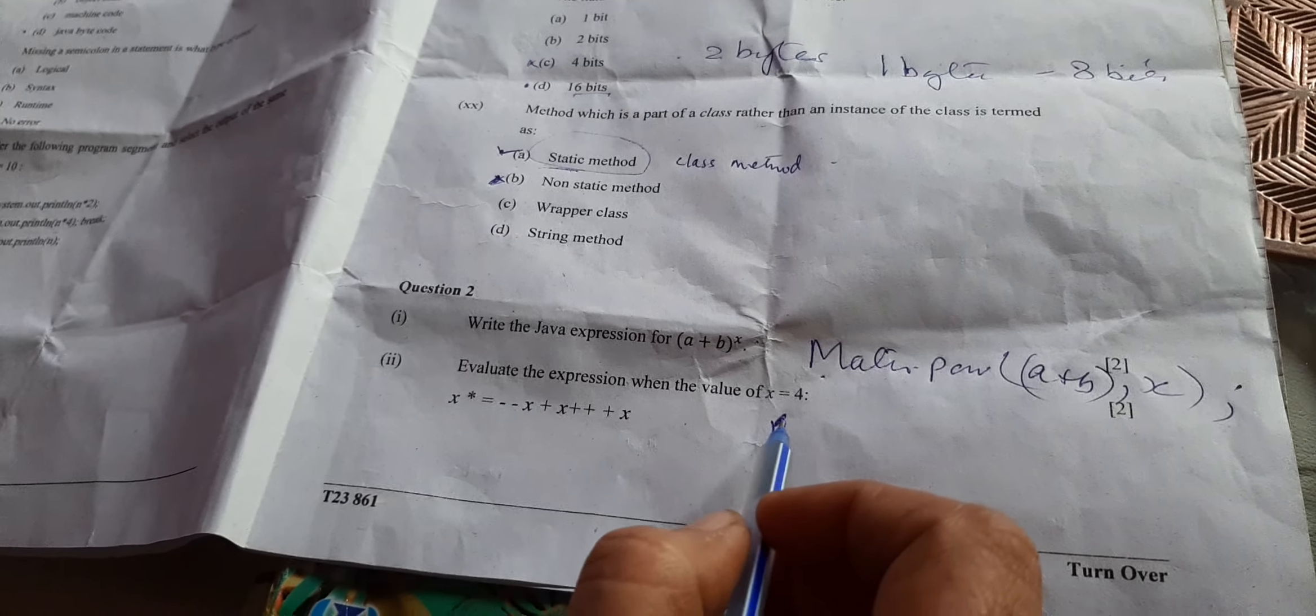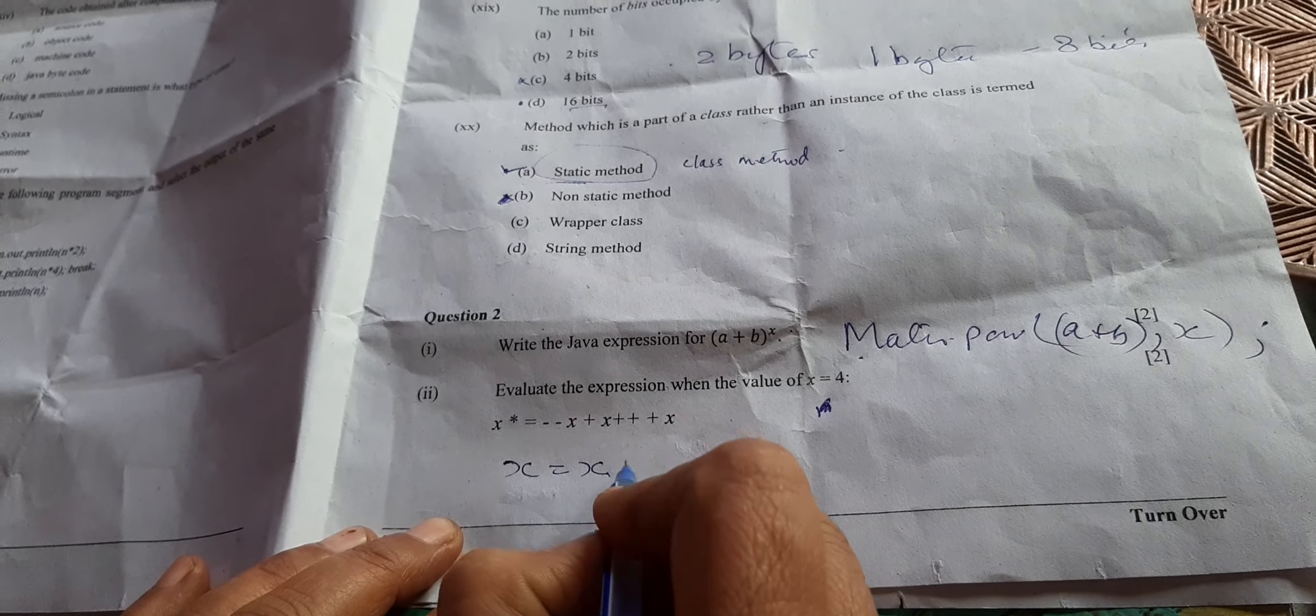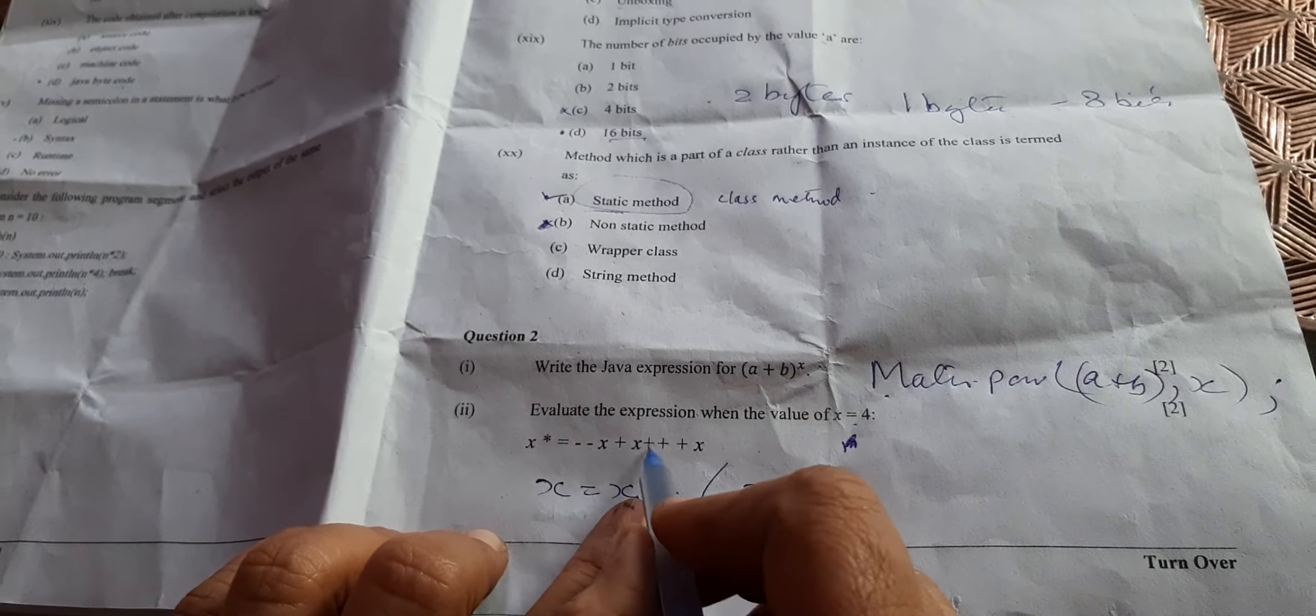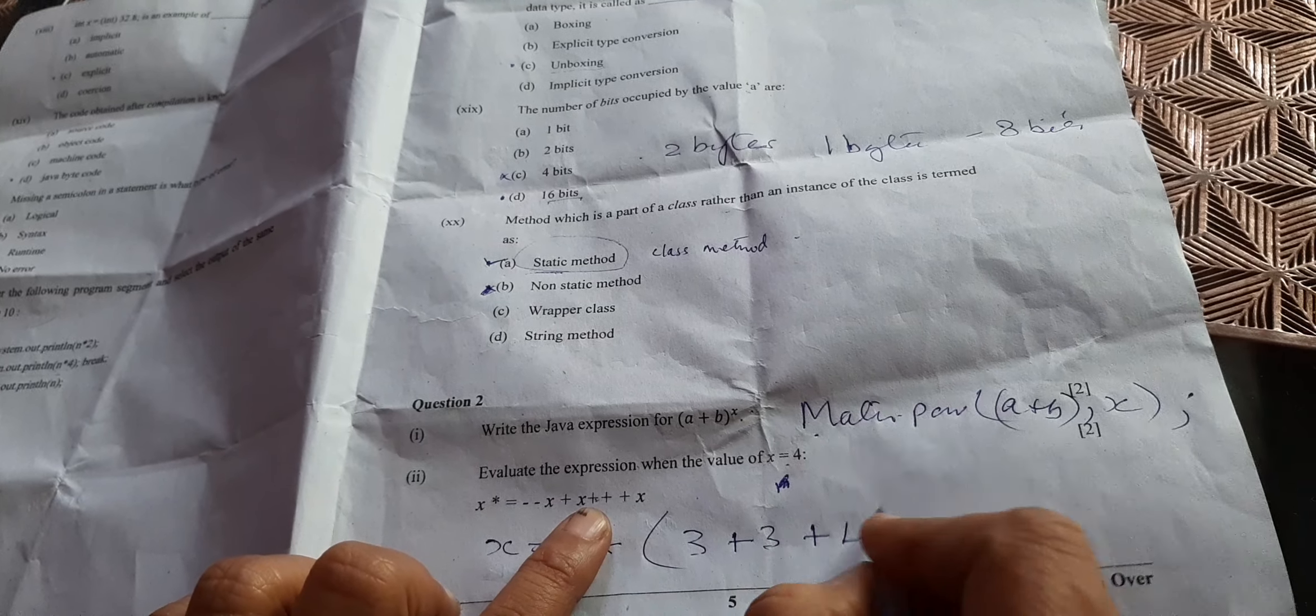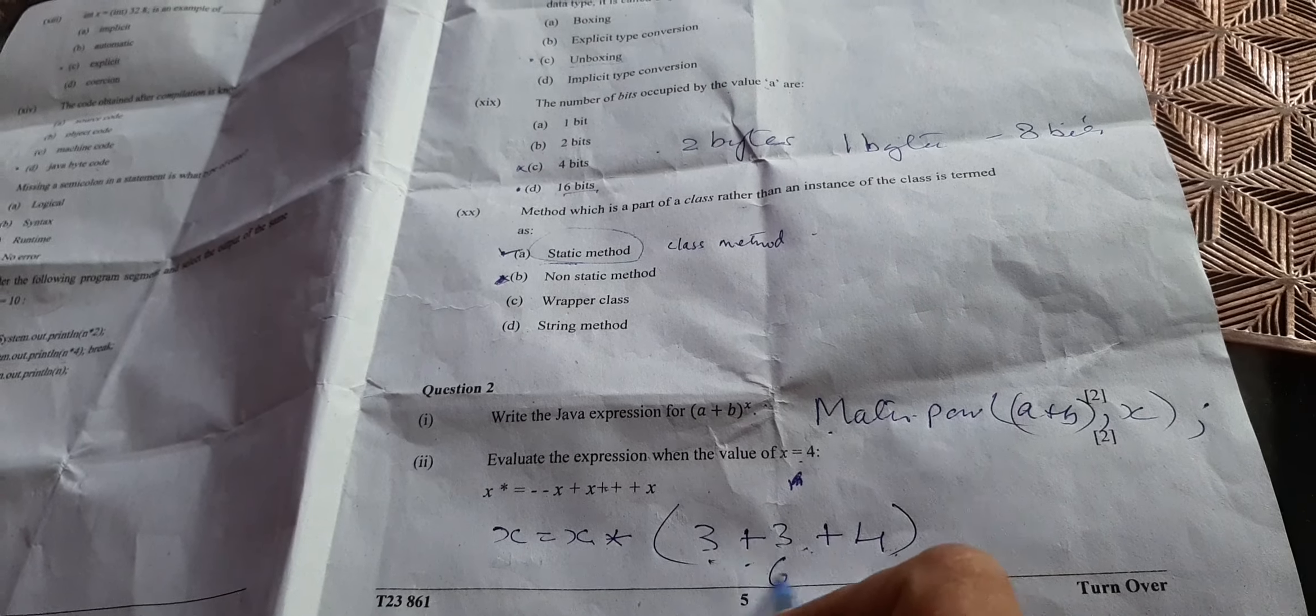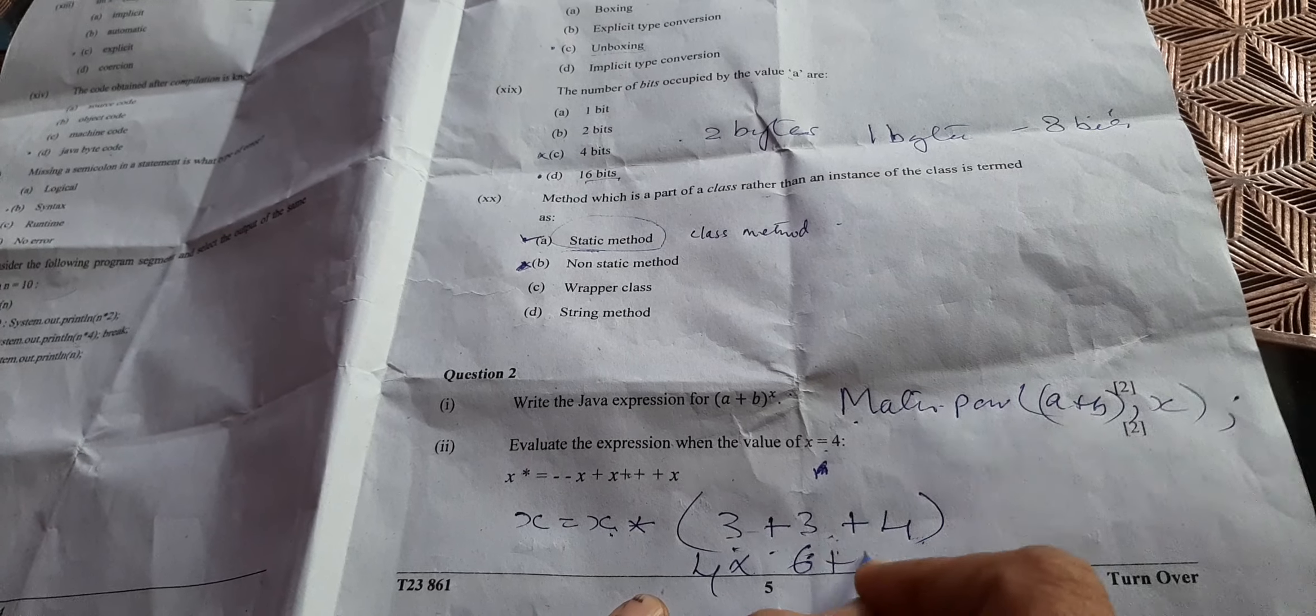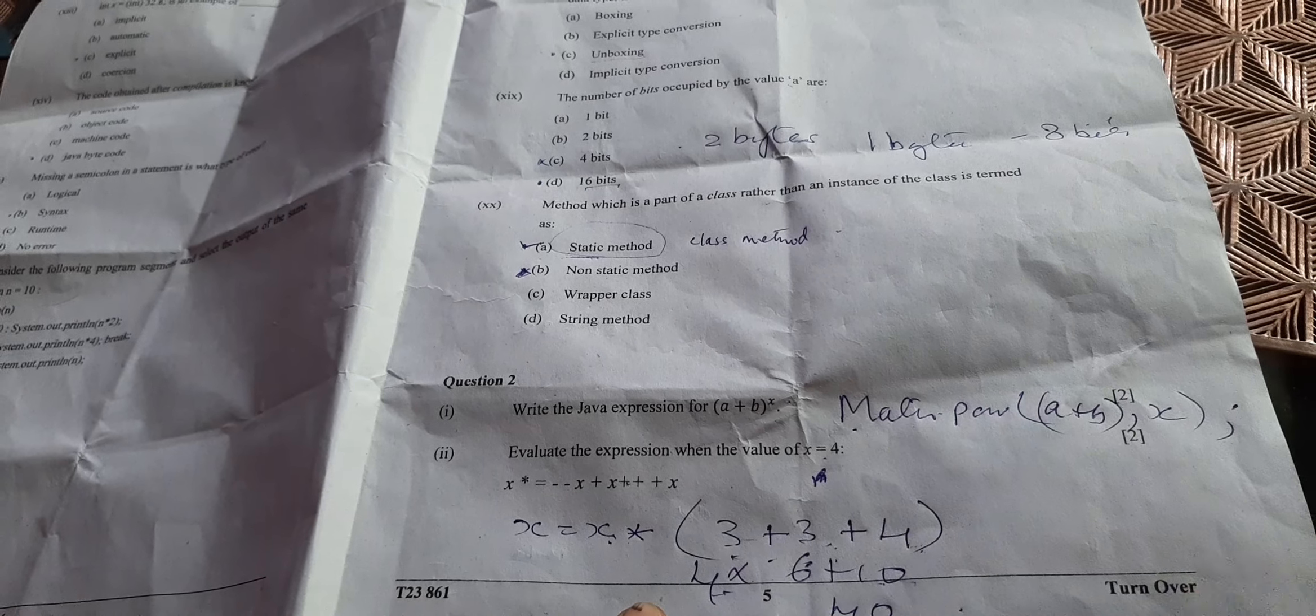Evaluate the following expression for x equals 4. First we will evaluate x equals x into 2. In bracket --x, x value is 4, so it will become 3, then it is postfix, then again it will be 3, then it will become 4. So 6 plus 4, 3, 6 plus 4, 6 into - what is the answer? This will be 10. 6 plus 4 is 10, and 10 into 4 is 40. This is the correct answer.